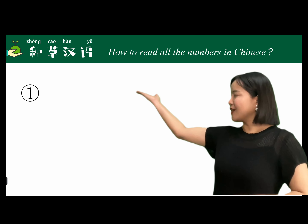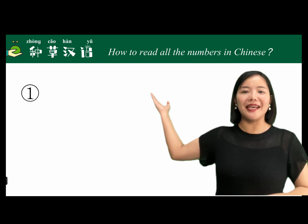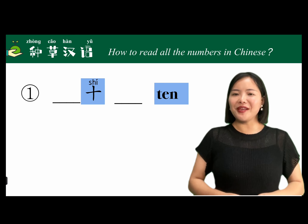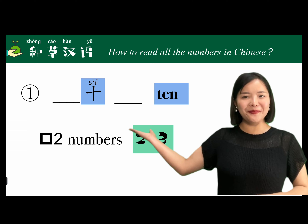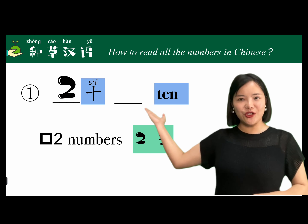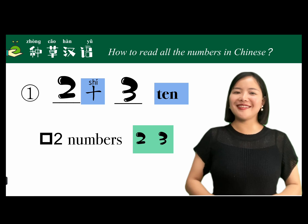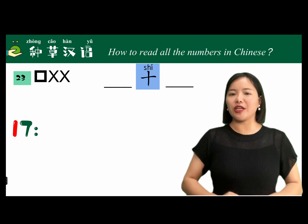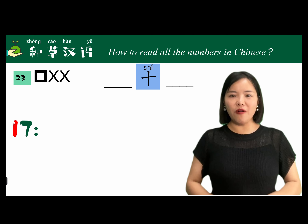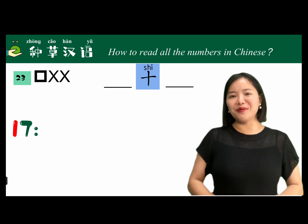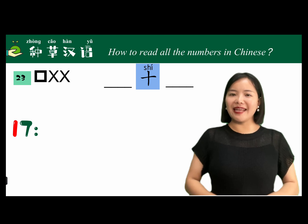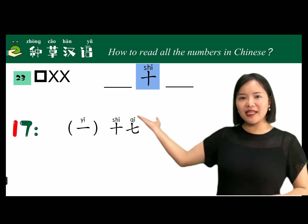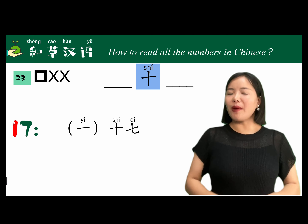The first word, 十 (shí), means 10. This is the pattern for reading two-digit numbers. For example, 23 is read as 二十三 (èr shí sān). It should be noted that when the first digit is one, we often omit it. For example, 17 can be read as 一十七 (yī shí qī) or simply 十七 (shí qī).